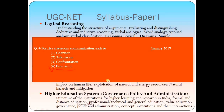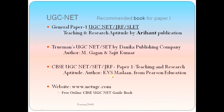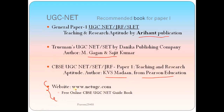Most questions in Paper 1 are very simple and straightforward. Some recommended books for Paper 1 are: 'General Paper 1 UGC NET JRF — Teaching and Research Aptitude' by Aryanth Publication; 'Truman's UGC NET SET' by Nika Publishing Company; and 'CBC UGC NET SET JRF Paper 1 Teaching and Research Aptitude' by KBS Madan from PSN Education. You can take any one of these books. Online resources are also available at www.netugc.com, which is a free online CBC UGC NET guidebook.